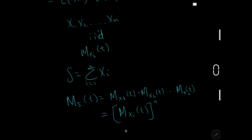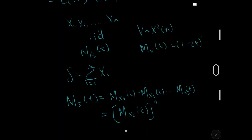You can also write this as M_{Xi}(t) to the power of n. Now, you also need the MGF of a chi-squared. So if V is chi-squared(n), then M_V(t) is equal to (1 − 2t) to the power of −n/2.